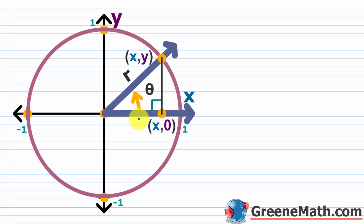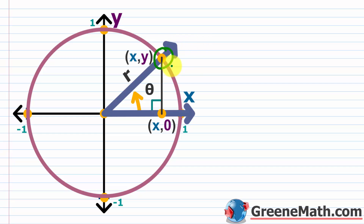We have an angle that's in standard position. The initial side and the terminal side — the terminal side of angle theta lies in quadrant one. We have a point labeled generically as (x, y), and that point lies both on the unit circle and on the terminal side of our angle.